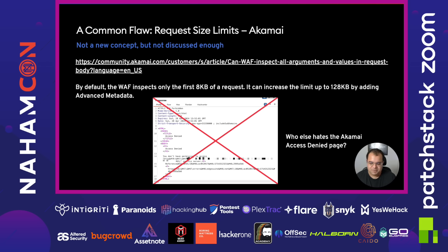And of course my biggest nemesis — and I think a lot of hackers' biggest nemesis — the Akamai WAF, which is probably the one I see most popularly on enterprise attack surfaces. It only really inspects the first 8 kilobytes of the request. You can increase this maximum to 128 KB, but what I've seen in the wild is no one really does that. 8 KB is usually enough to bypass Akamai.